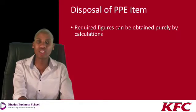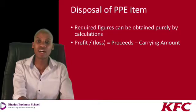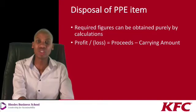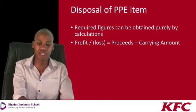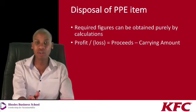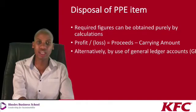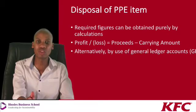The required calculations to recognise the asset and process all entries include, amongst others, the calculation of the profit or loss on disposal, which is your proceeds less your carrying amount. We therefore need the proceeds amount and need to work out the carrying amount. Alternatively, we could use general ledger accounts to work out the profit or loss on disposal, which we will see when we do the asset disposal shortly.